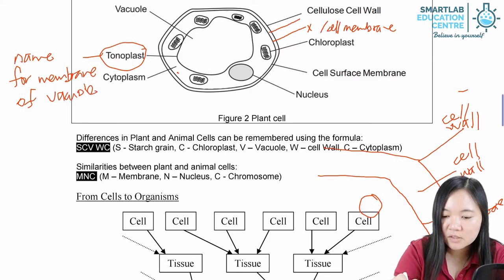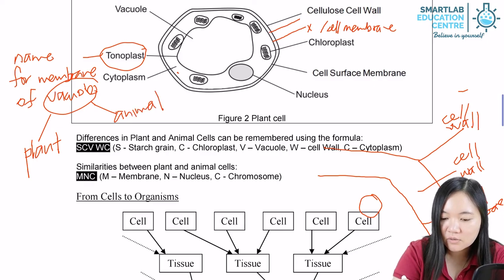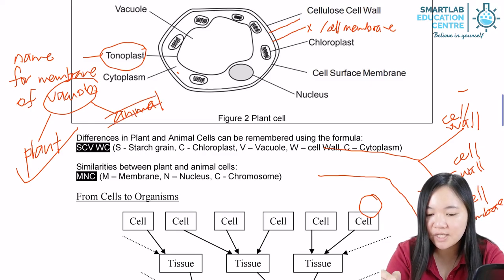Remember, we have plant cells having vacuoles. We also have animal cells having vacuoles. But only in plant cells, the vacuole membrane is known as tonoplasm. In animal cells, the vacuole membrane does not have any name.